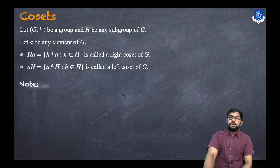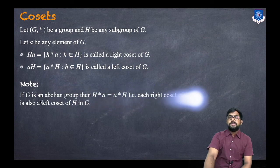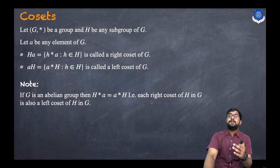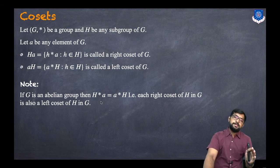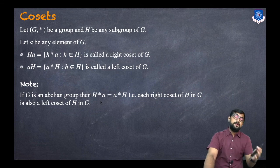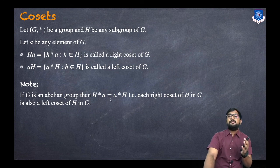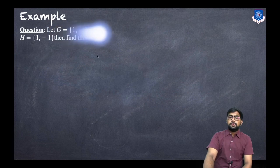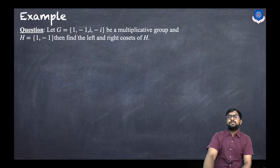Note: if G is an abelian group, then h*a equals a*h, which means each right coset of H in G is the same as the left coset of H in G. An abelian group has the commutative property, so we can change the order, and in that case left and right cosets are the same.